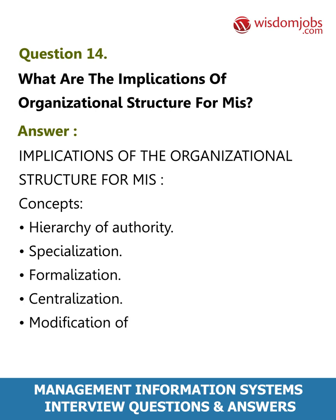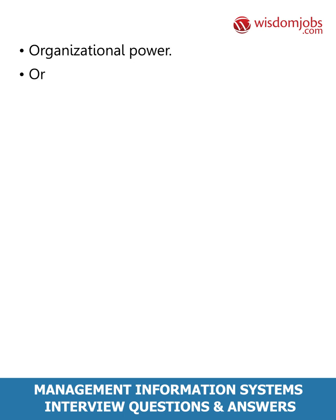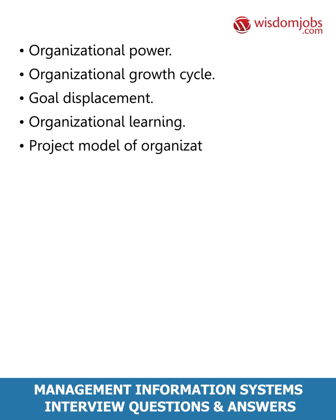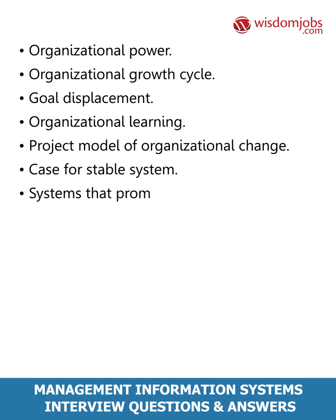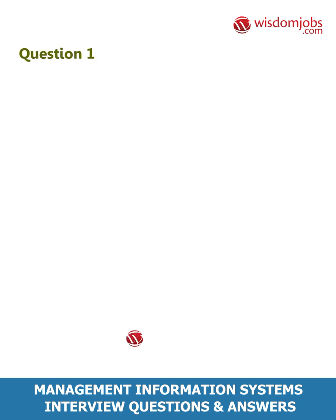Answer: Implications of the organizational structure for MIS include concepts such as hierarchy of authority, specialization, formalization, centralization, modification of the basic model, information model of organization, organizational culture, organizational power, organizational growth cycle, goal displacement, organizational learning, project model of organizational change, case for stable system, systems that promote organizational change, and organizations as socio-technical systems.